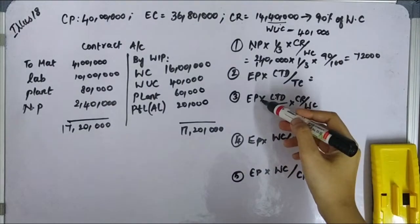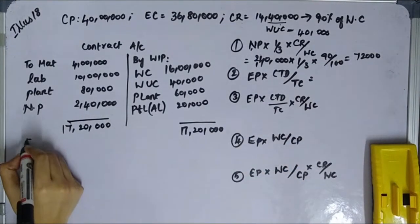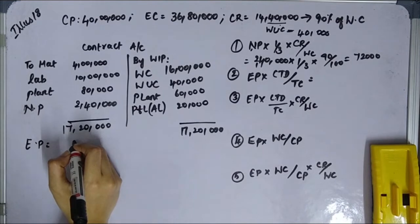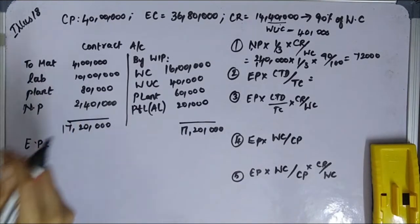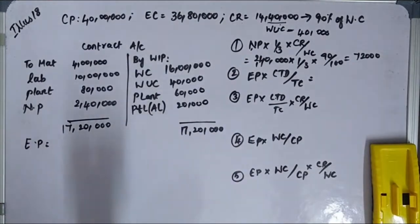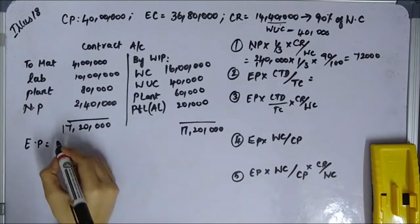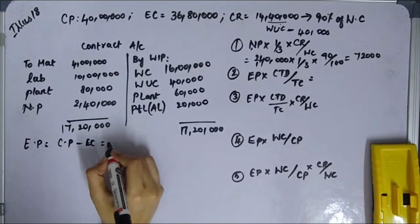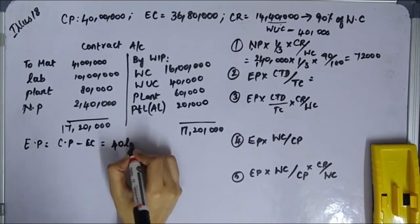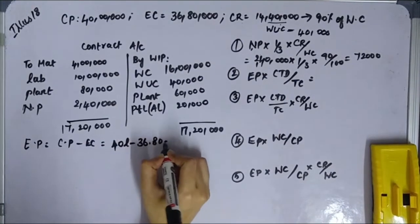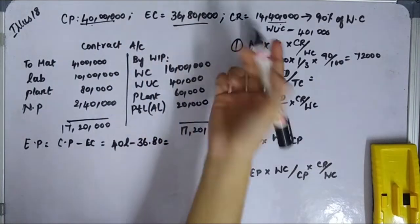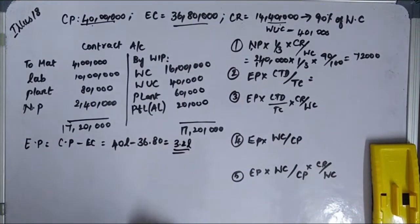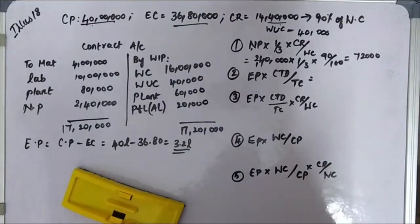Estimated profit equals contract price minus estimated cost. Contract price is 40,00,000 minus estimated cost of 36,80,000, giving estimated profit of 3,20,000.